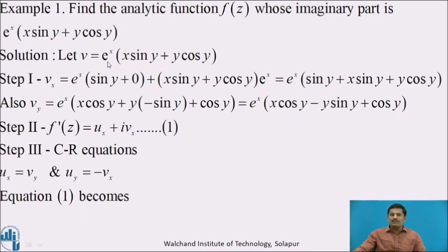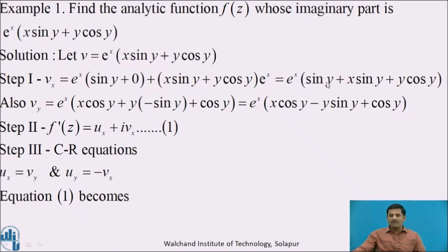Here we can see that this is the product of two functions of x, therefore we use the product rule to differentiate it. We write e^x as it is and differentiate the second function. In the first term, sin y is constant and the derivative of x is 1; in the second term, x is not involved so its derivative is 0. Writing the second term x·sin y + y·cos y as it is, the derivative of e^x is e^x. After taking e^x common, we get e^x·(sin y + x·sin y + y·cos y).